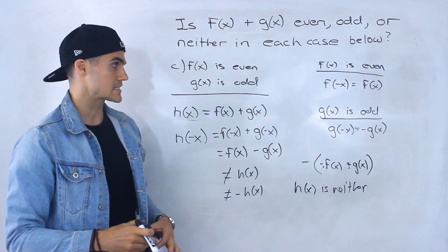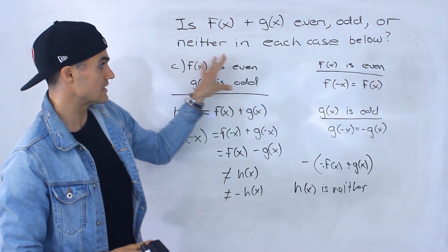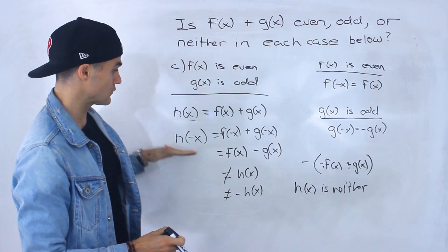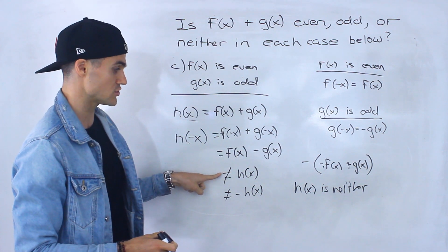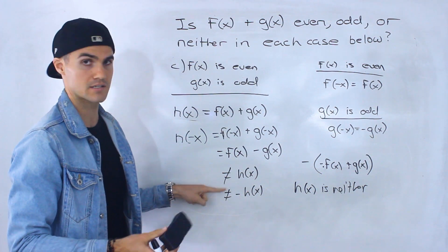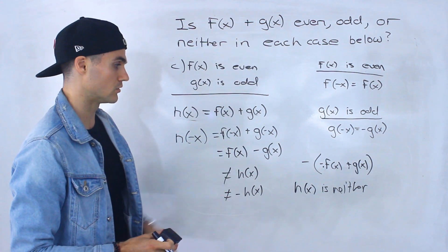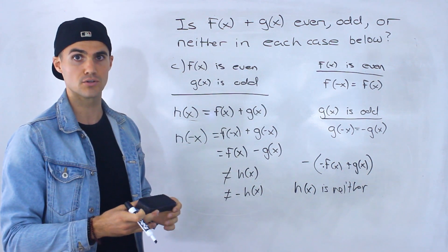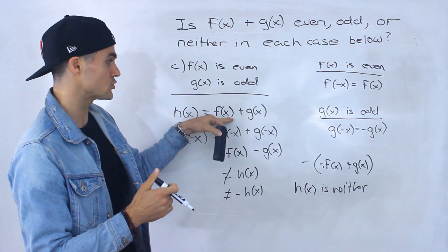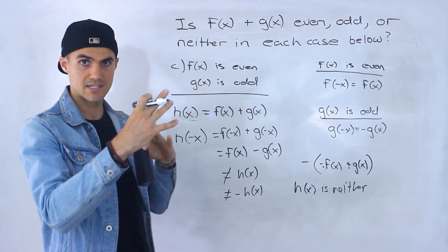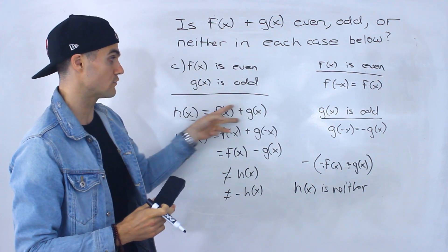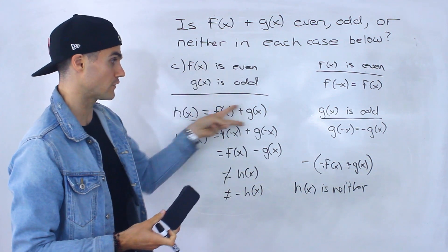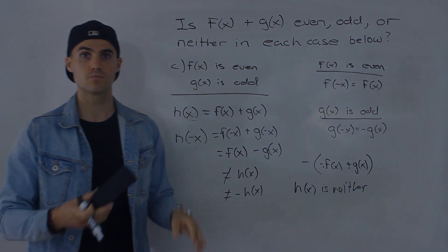So if you get a question like this, write out the individual symmetry properties on the side, then use those in your main proof. Check if h of negative x equals h of x — then it's even; equals negative h of x — then it's odd; otherwise it's neither. You can also verify graphically using Desmos: add two even functions and see they stay symmetric; add two odd functions and they still have point symmetry; add an even and odd function and you'll see it's neither.